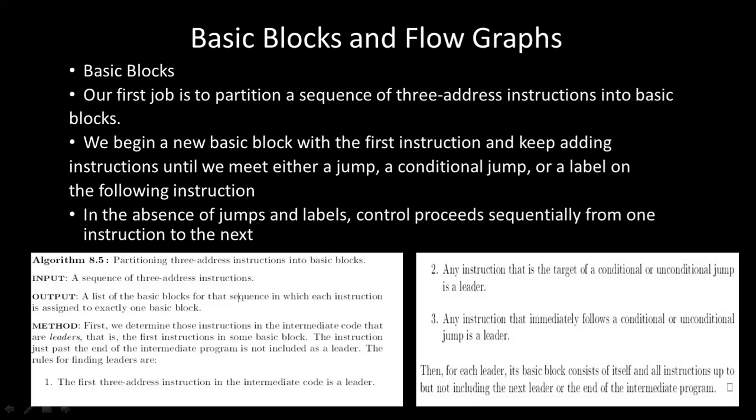If there is a jump, conditional jump, or label on the following instructions, we have to start a new block. In the absence of jumps and labels, control passes sequentially from instruction to instruction within the block. By using this algorithm — partition and create three-address instructions into basic blocks — we create the basic blocks.